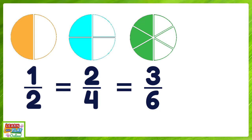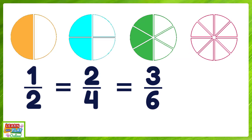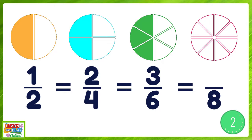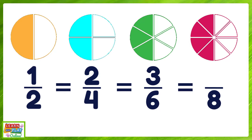Let's try one more example using the same circle, but this time we are going to have eight equal parts. If there are eight equal parts altogether, that means the denominator is eight. To find the equivalent fraction as the fractions before, how many parts do we need to shade in this new circle of eighths? We would need to shade four parts. Well done — four eighths is the equivalent fraction to all of the previous fractions we have looked at because they all show the same amount.